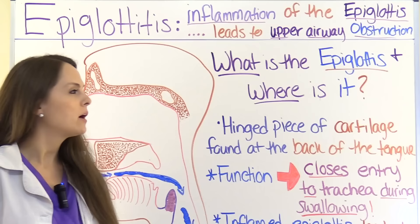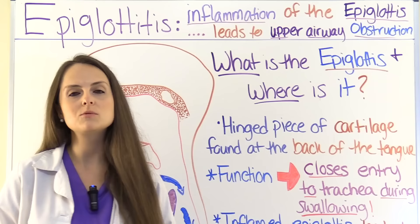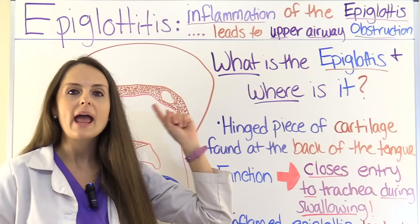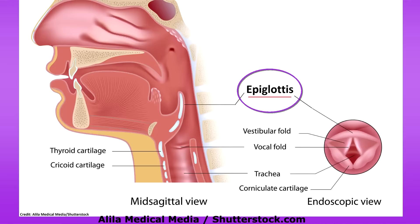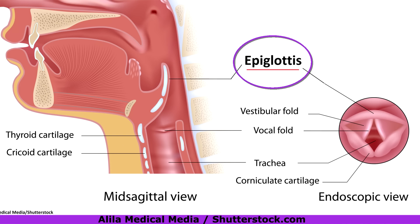To help us understand the pathophysiology and why our patients are presenting with certain signs and symptoms, we have to understand what the epiglottis is — its role and where it is located. The epiglottis is a hinged piece of cartilage found at the back of the tongue. In this picture, you can see where it is located, found on the inside of the thyroid cartilage.